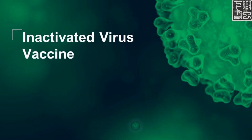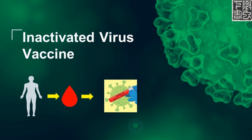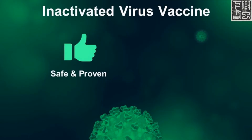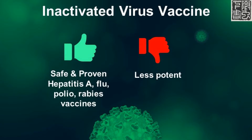Inactivated virus vaccines are made by collecting blood samples from infected patients and cultivating the virus before inactivating it with a chemical agent. The method is safe and a proven technology. Inactivated virus vaccines in use include hepatitis A, flu, polio, and rabies. However, inactivated virus vaccines are not as potent as live vaccines, so you may need to get multiple shots to achieve the same level of immunity.